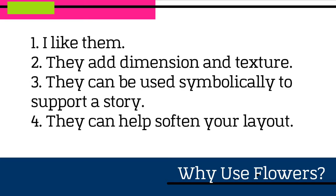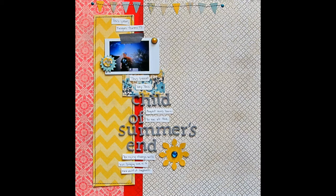Let's take a look at some different scrapbook layouts. On this first layout I created a page about summer and how my son is a child born at the end of summer. I used a lot of bright intensive color mixed with that hard pattern. That black pattern paper has a hard feel to it and I wanted to soften the page just a tiny bit, so I used a small piece of floral print pattern paper underneath my son's photo.